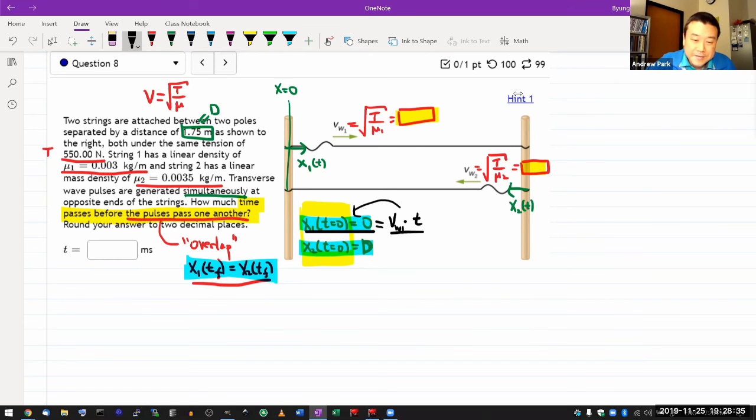So, same thing with x, or similar thing with x2, you recognize that at time equals zero, you are starting out from d, so you should start out from d. And then the position is actually decreasing as time goes, it's going to be minus Vw2 times the same time t. And, you know, go through this and kind of make sure that it makes sense.